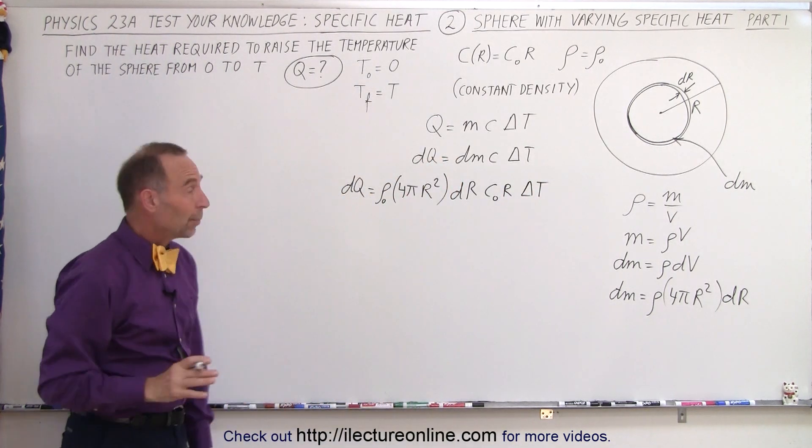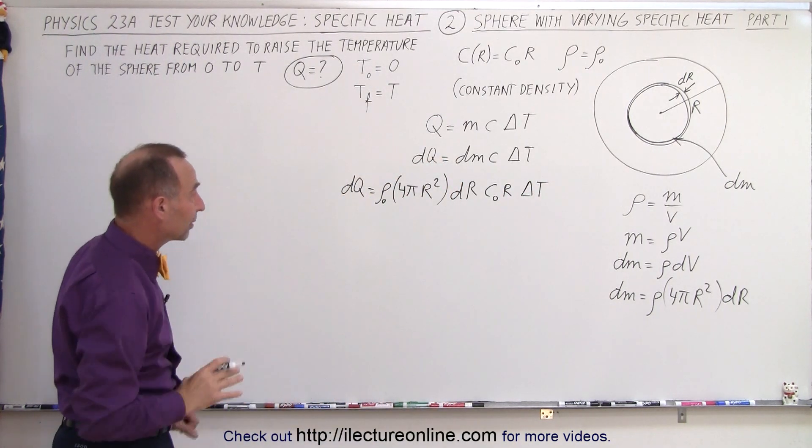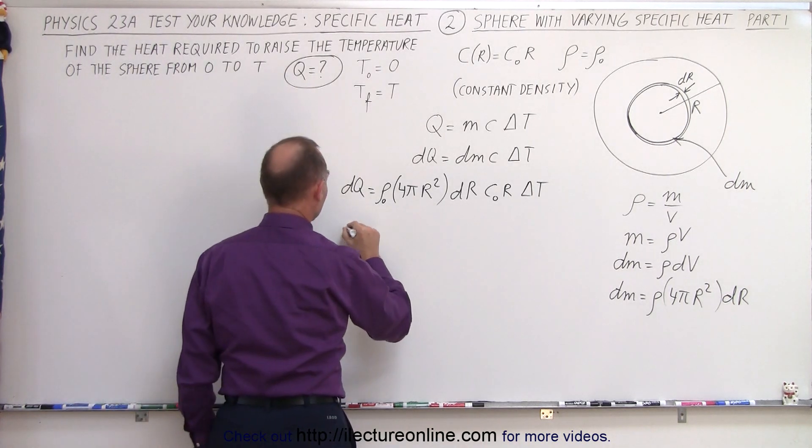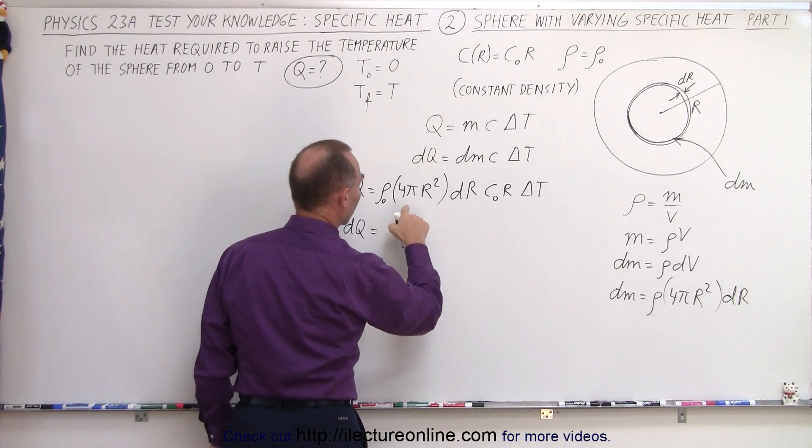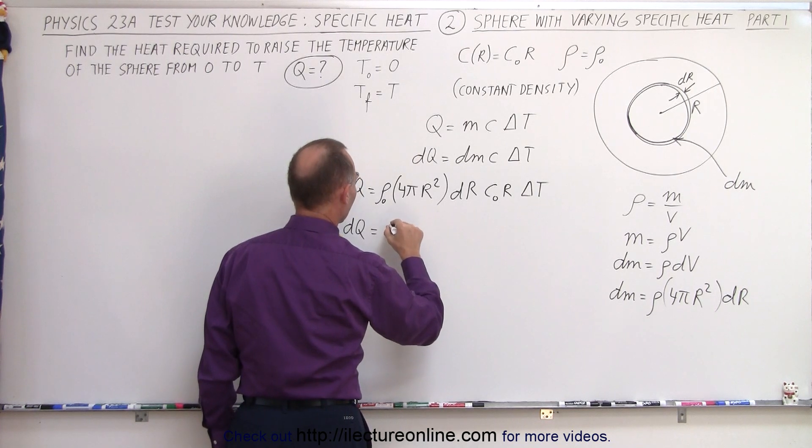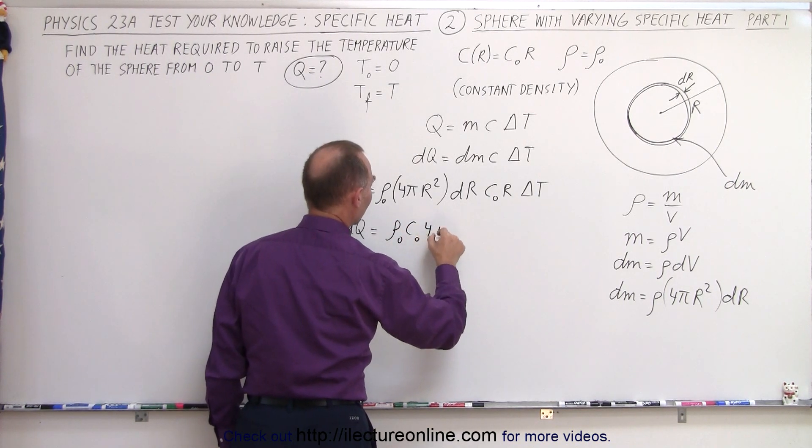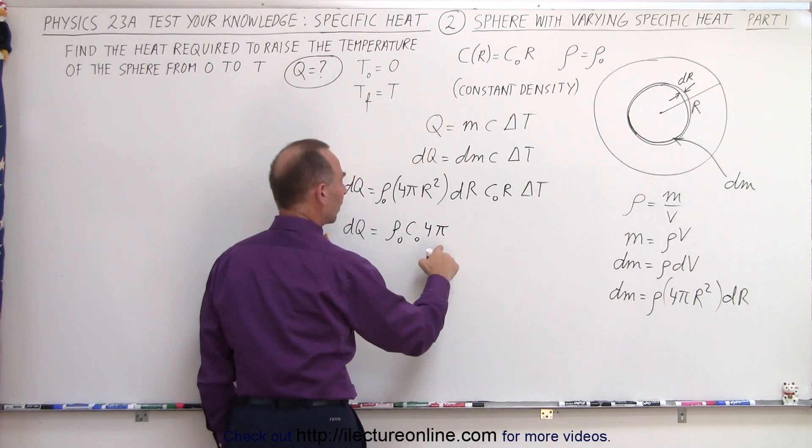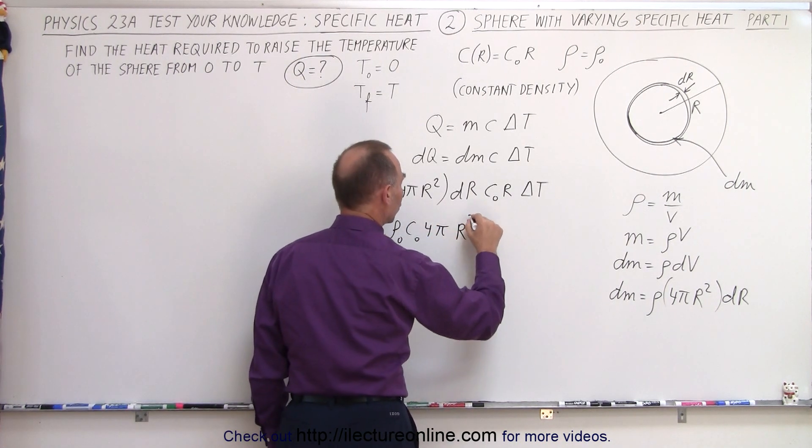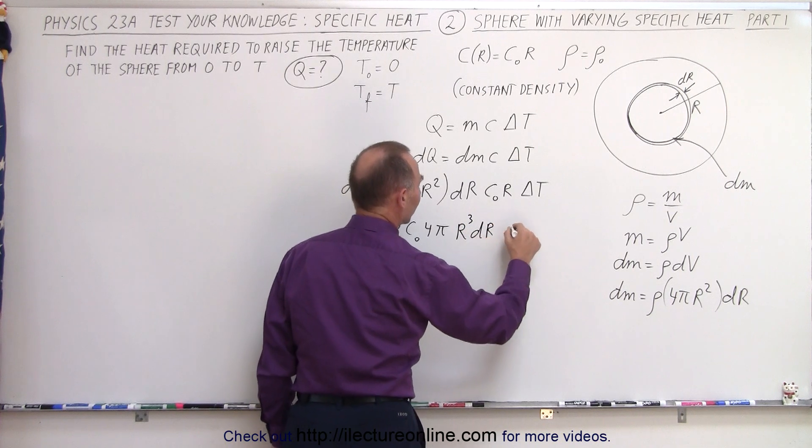All right, now what we can do is kind of collect common terms, so we can say that dQ is equal to all the constants here, so we have density sub-naught, c sub-naught times 4 pi, those are all constant, times r cubed dr times delta t.